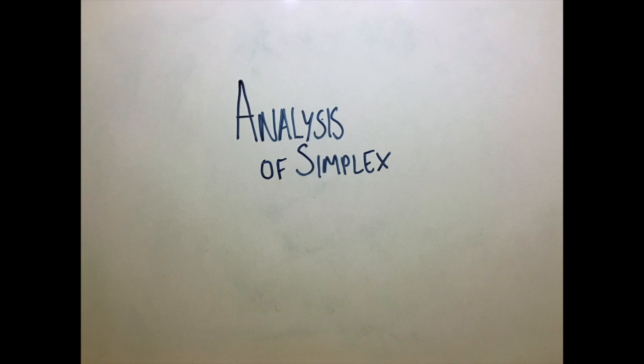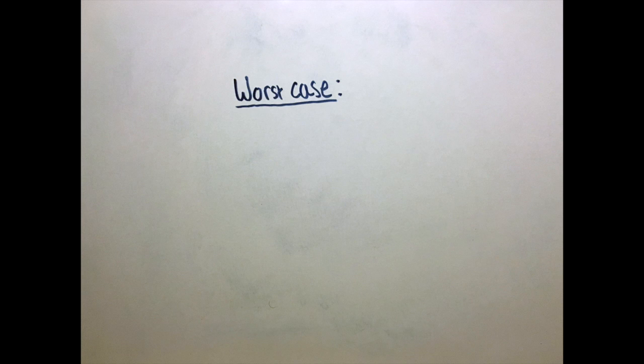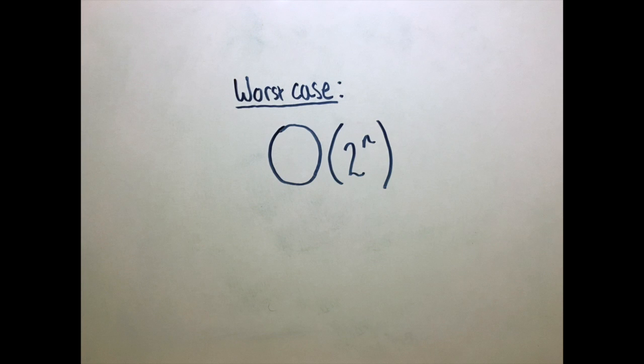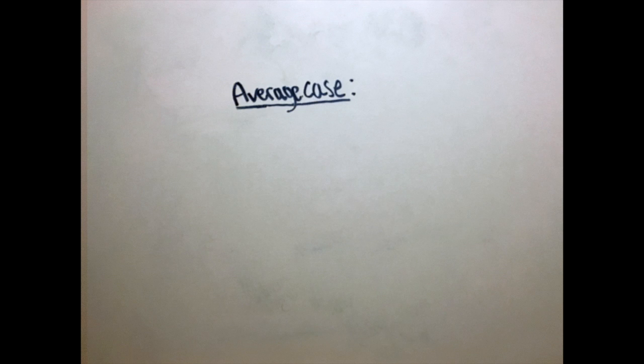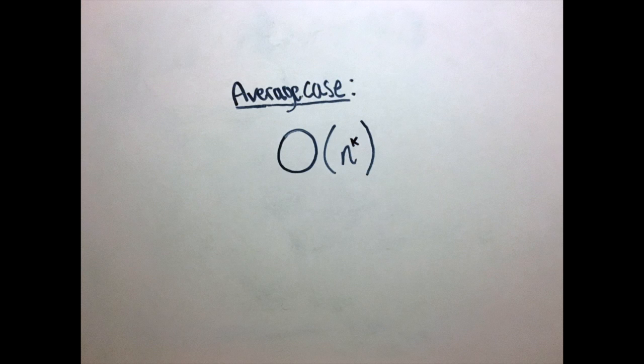To finish, let's look at the analysis of simplex. In the worst case, we'll have n dimensions and n constraints, which would cause there to be big O of 2^n vertices, and therefore simplex would run in O(2^n) time. However, in practice, we never really get this many vertices, so the average runtime of simplex is polynomial. That is O(n^k), where k is some integer.